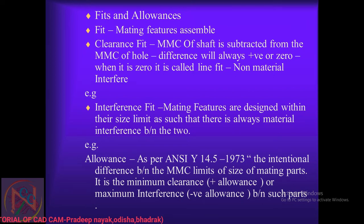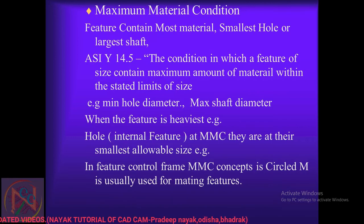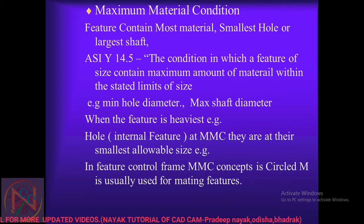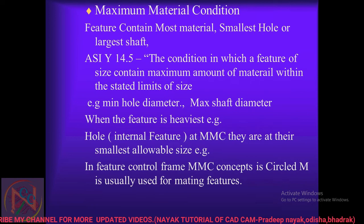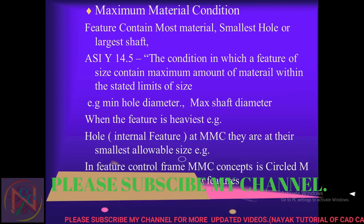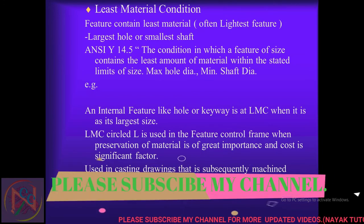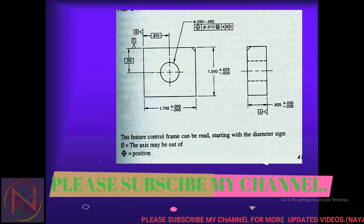Maximum Material Condition (MMC) is the feature condition that contains the most material — the smallest hole and largest shaft. Per ANSI Y14.5, it is the condition in which a feature of size contains the maximum amount of material within the stated limits of size — for example, minimum hole diameter and maximum shaft diameter. The MMC concept is commonly used in the feature control frame. Least Material Condition (LMC) is the opposite of MMC.